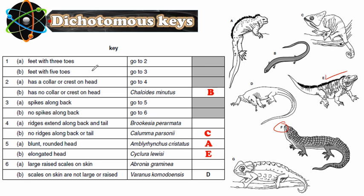Let's go to F. Feet with three toes: one, two, three, four — not three. So feet with five toes. Go to question three: spikes along the back? No, it does not have spikes. Go to question six: large raised scales on skin? Yes, it has large scales on its back. So the name is Abronia graminea. We write F here.